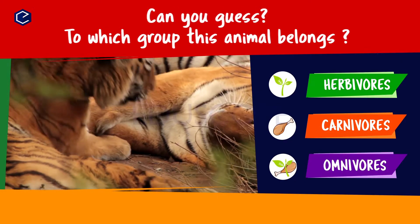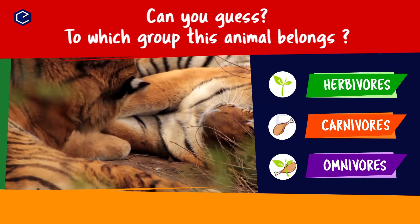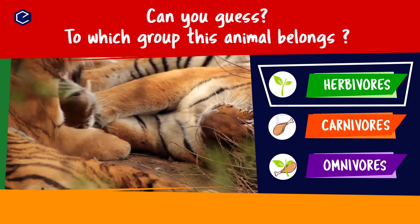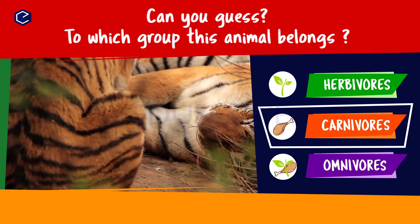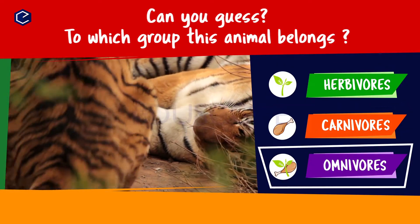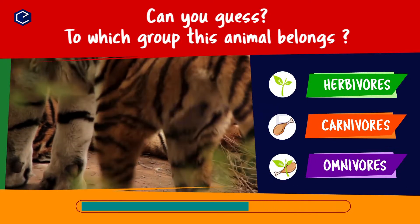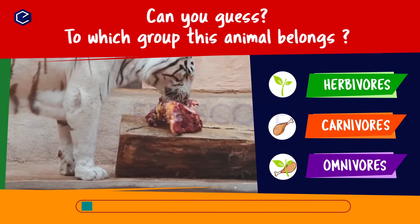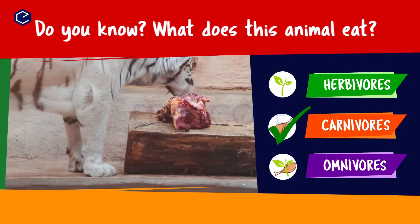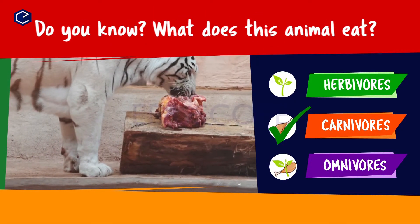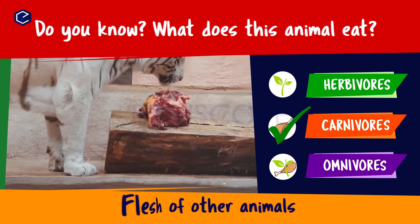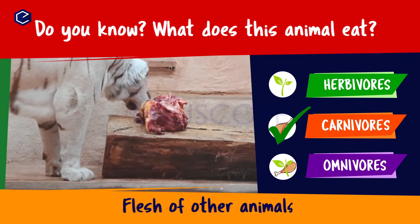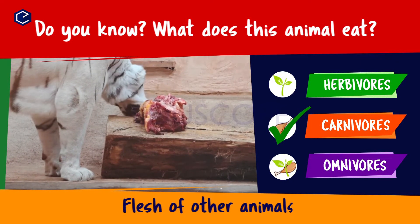Can you guess to which group this animal belongs? Herbivores, carnivores, omnivores. Do you know what this animal eats? A tiger eats flesh of other animals. So tiger is a carnivore.